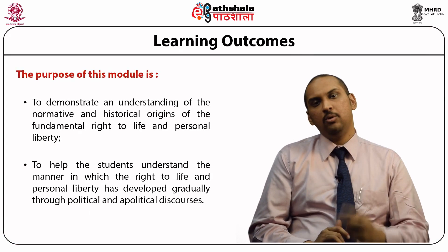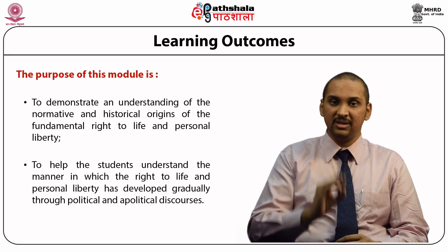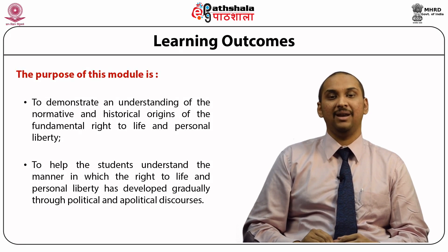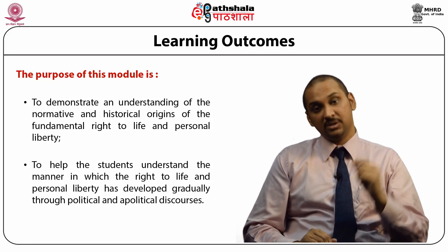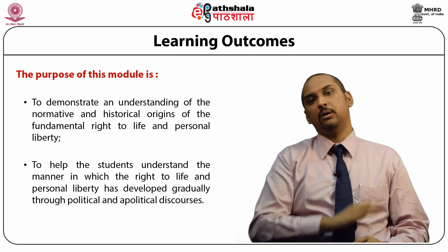In this module, we will look at the historical genesis of the right to life and the value on life placed by state and non-state actors. The module will trace the historical development of the right to life by chronicling developments pre and post the American Revolution. The American Revolution was the beginning of the overt state recognition of the right to life, especially in a democracy. There are two learning outcomes: first, to demonstrate an understanding of the normative and historical origins of the fundamental right to life and personal liberty; second, to help the student understand the manner in which the right to life and personal liberty has developed through centuries and through political and apolitical discourses.